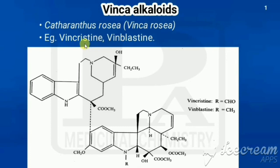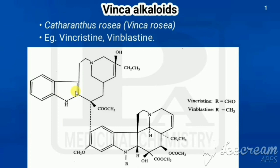The main examples are vincristine and vinblastine. This is the structure of vinca alkaloids. It has two multi-ringed units. The first one is called catharanthine, which is an indole-containing moiety. Indole is a benzene ring fused with a pyrrole ring.